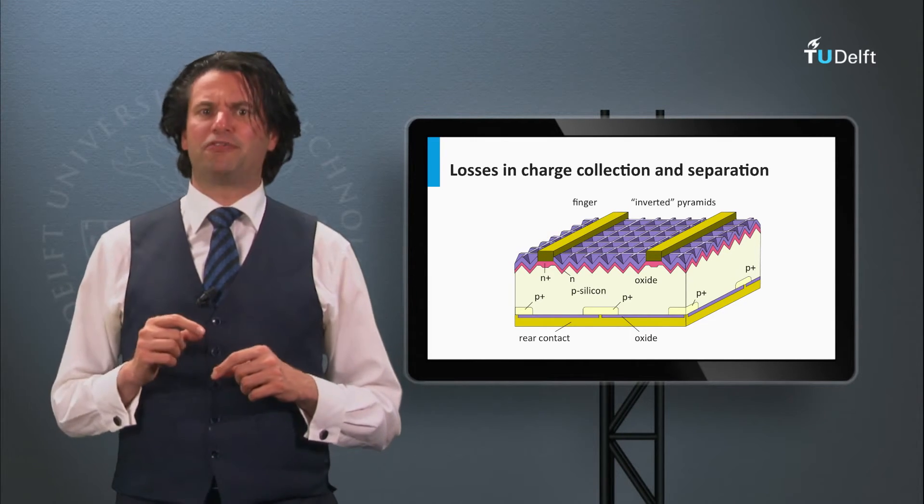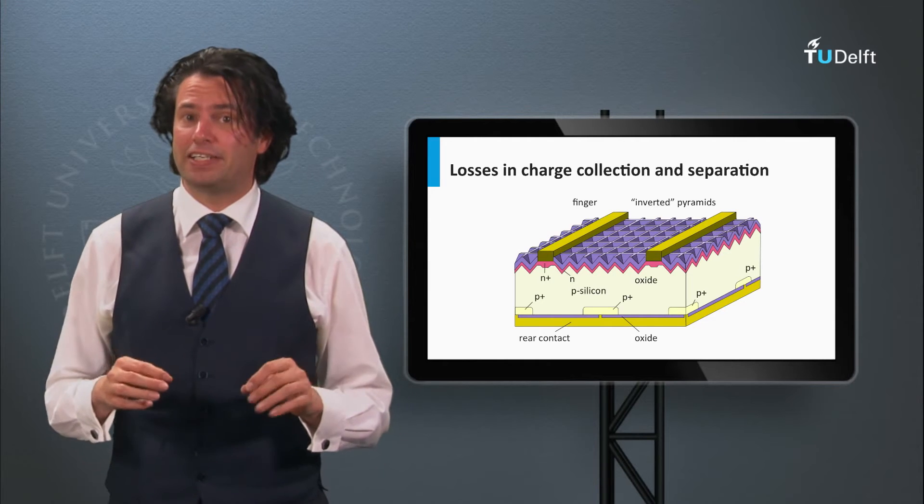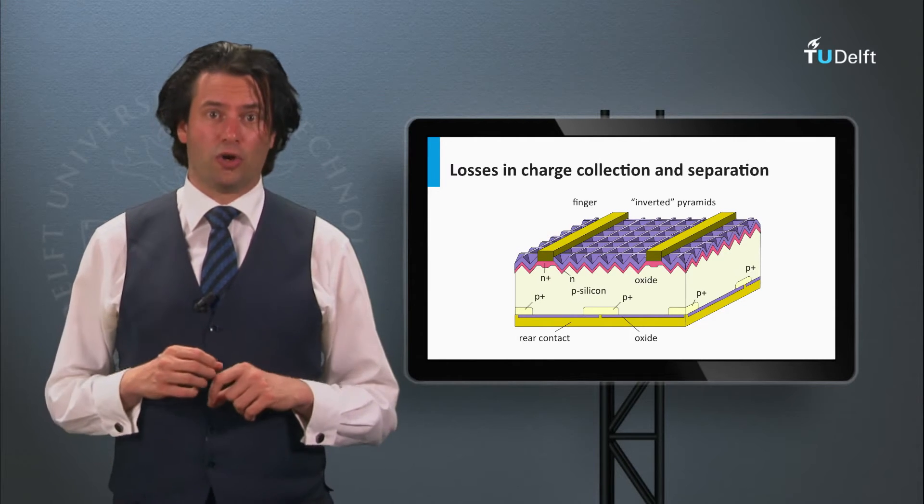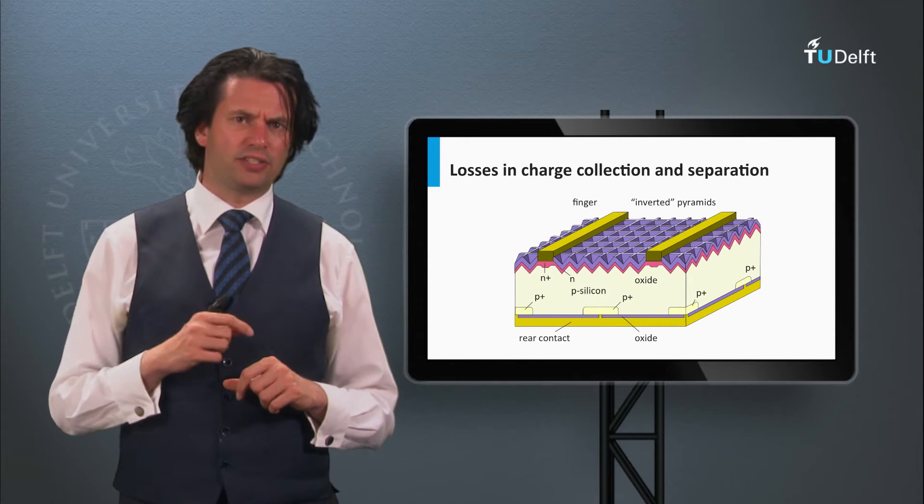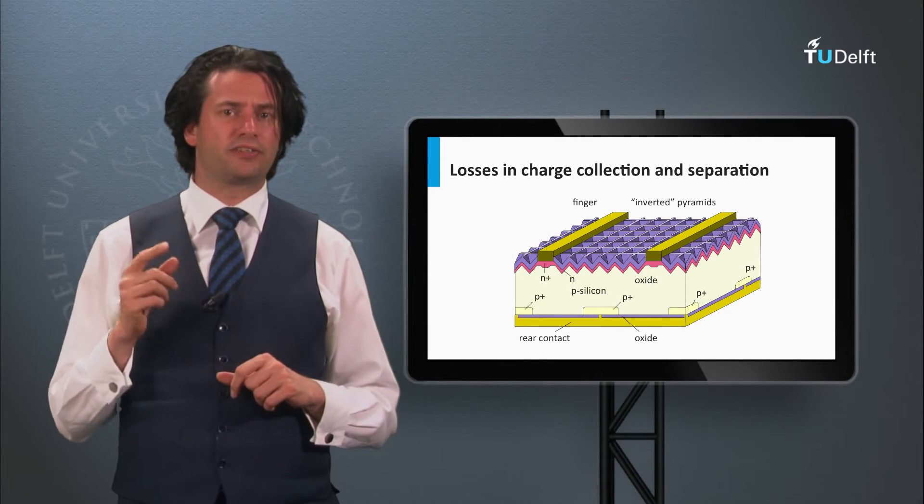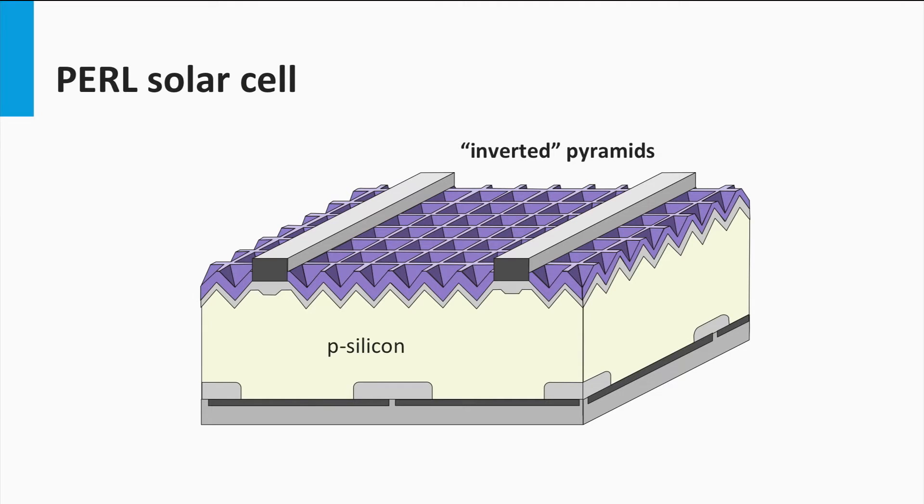PEARL is an abbreviation for Passivated Emitter Rear Locally Diffused. The name indicates the two important concepts integrated into the solar cell. The optical losses of the PEARL solar cell at the front side are minimized using three important concepts.